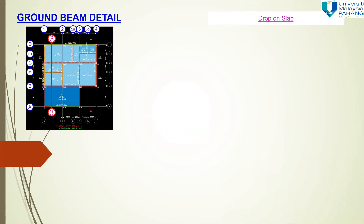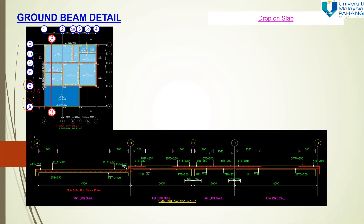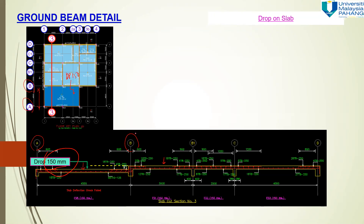For cross section 3-3, there is a drop from grid line A to grid line B. The slab here and the slab there are not at the same level. The drop is equal to 150 mm — that's why you see dp 150 on the plan, meaning the drop is 150 mm. You can see the beams at A, B1, C, and D supporting the slab, along with the type of steel reinforcement inside the slab.